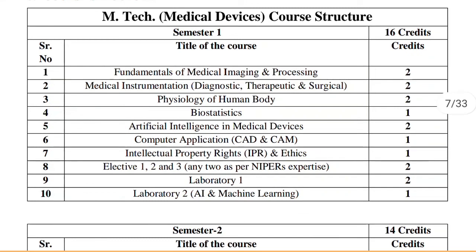Let us see the course structure, which includes Semester 1, 2, 3, and 4. In Semester 1, the subjects are: Fundamentals of Medical Imaging and Processing, Medical Instrumentation, Physiology of Human Body, Biostatistics, Artificial Intelligence and Computer Applications, CAD/CAM, and Intellectual Property Rights. There are also elective subjects from which you need to select one, along with a laboratory component. Semester 1 carries 16 credits.